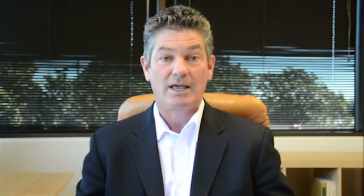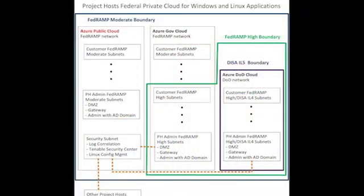Keeping all these in mind, what we decided to do was to build our environment on top of three different Azure networks: Azure Public, which has FedRAMP moderate; Azure Gov, which has FedRAMP high; and Azure DoD, which has DISA IL-5. When I say they have those compliances, I mean they have those at the infrastructure level. We then had to put in place the controls at the software-as-a-service level to bring them up to the full standard of compliance for those different levels.